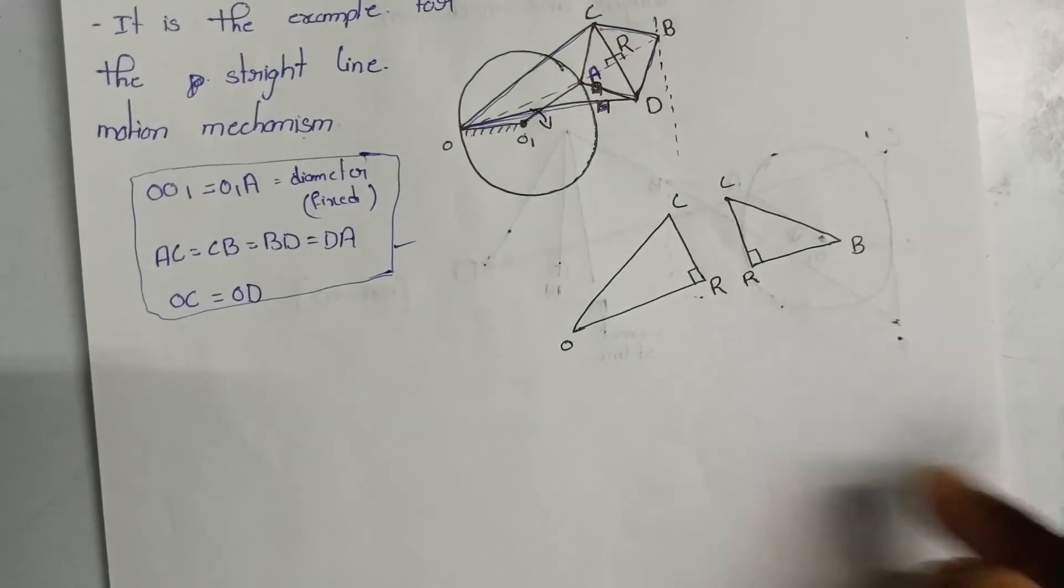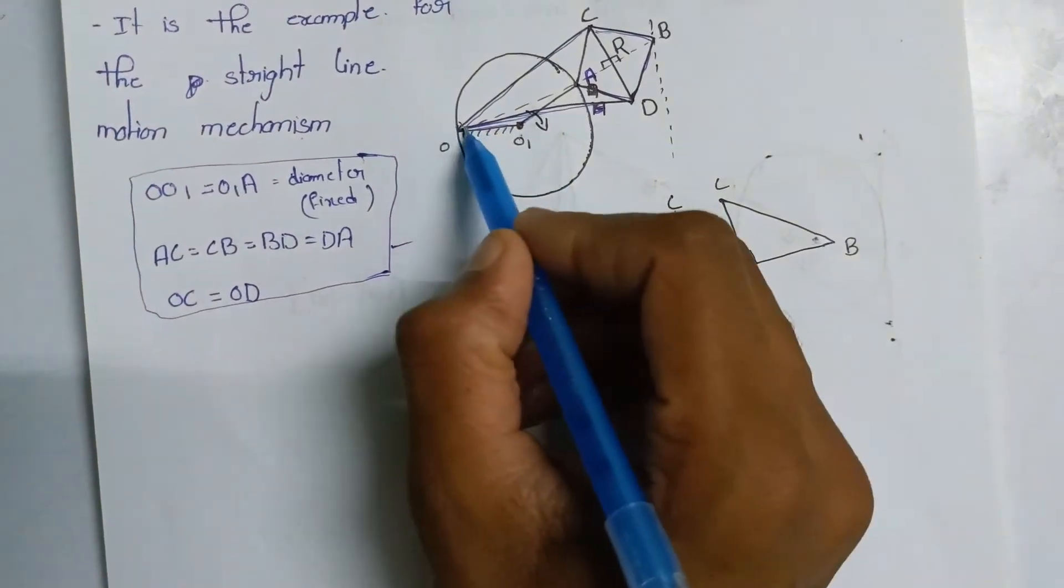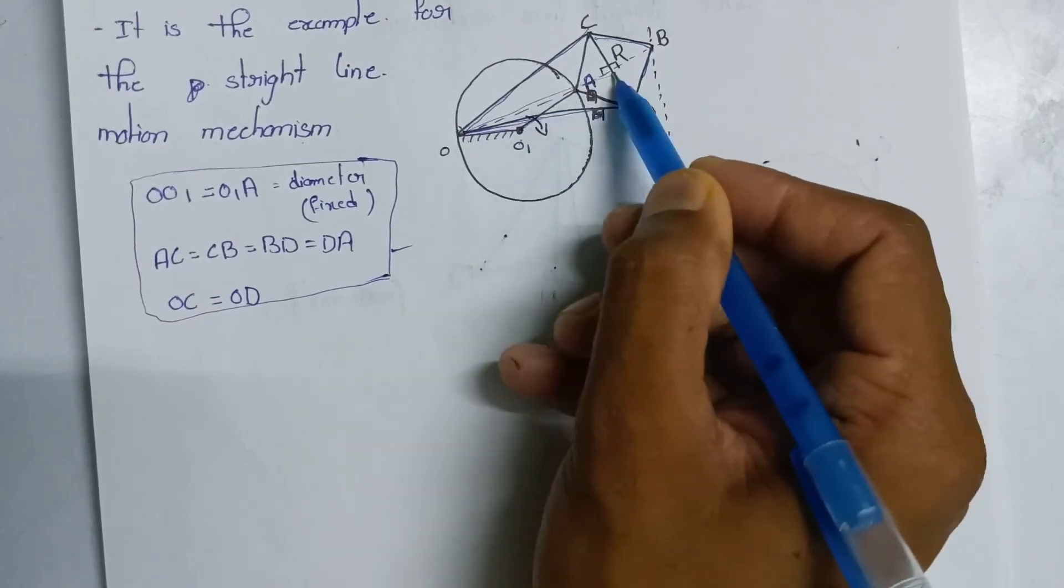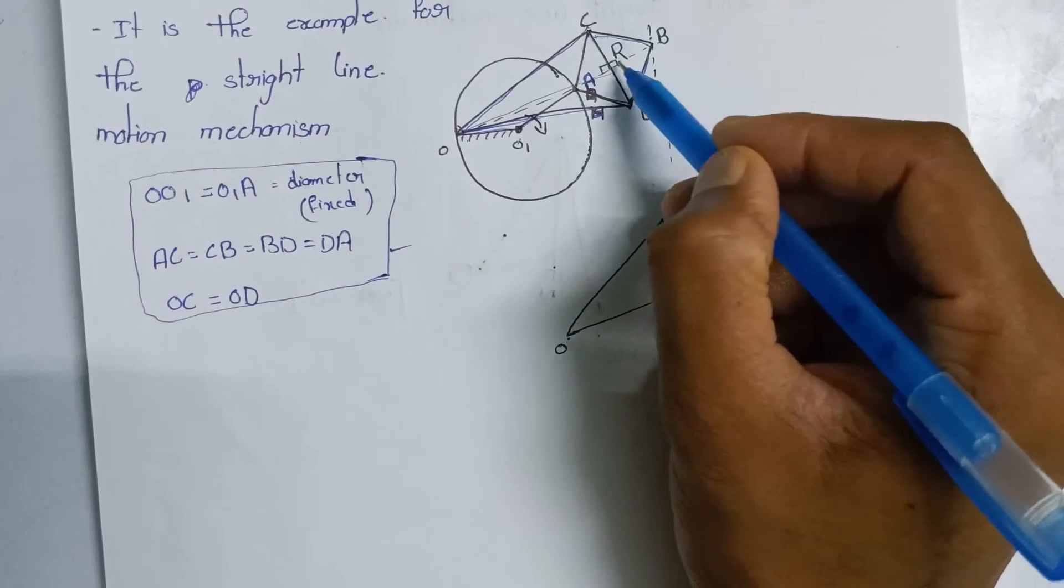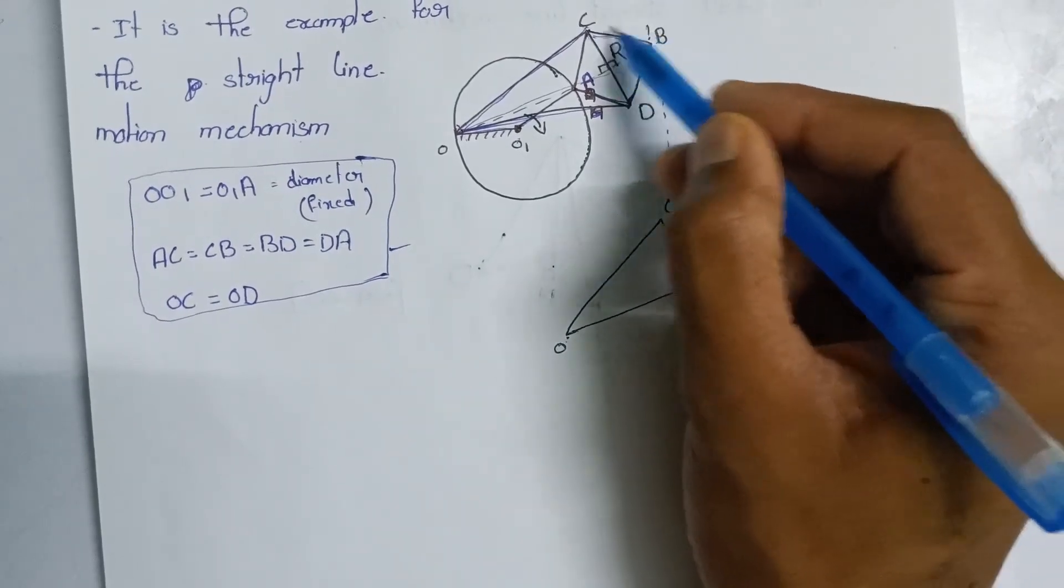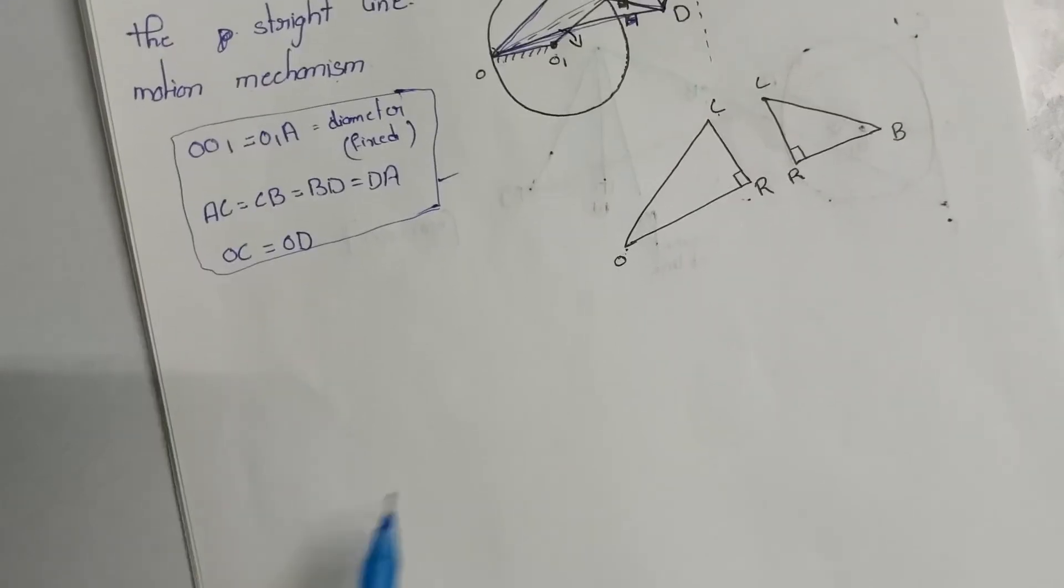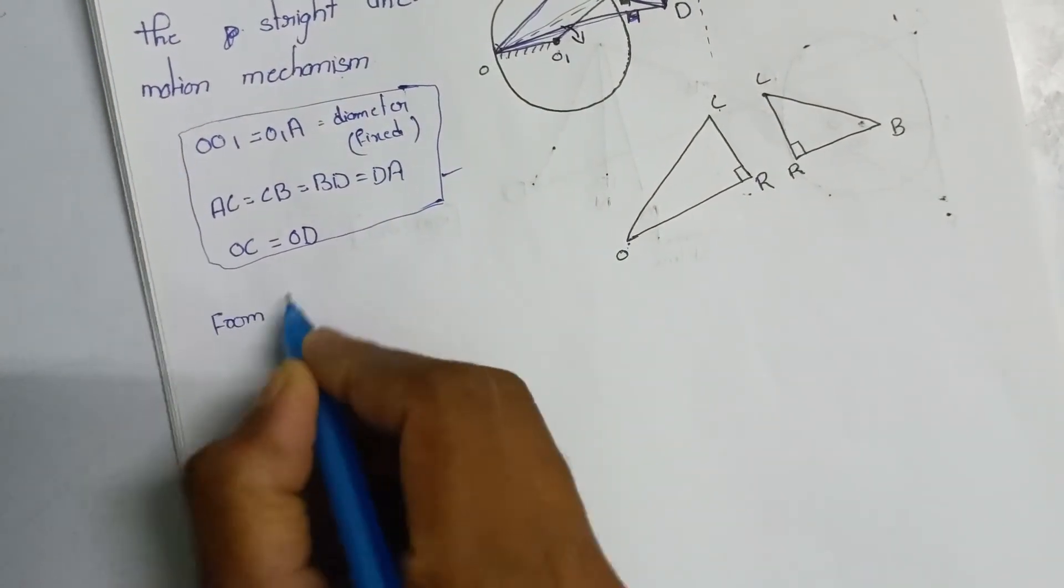Next, try to replicate the diagram into two triangles. Consider triangle OCA. Triangle OCA can be considered. Next, try to replicate triangle CRB. These two triangles are considered.